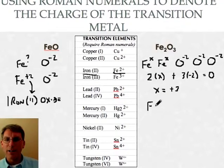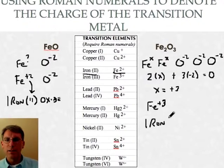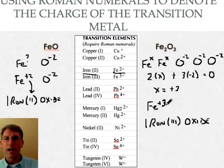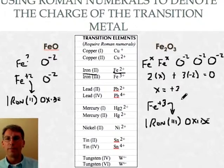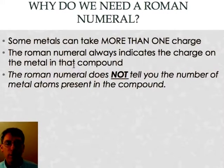So that means that my iron must be taking a positive three charge here. So when I name it I can name it iron with a positive three charge bonded to oxygen which is oxide. Iron three oxide. Again the charge is shown by the Roman numeral right there. Why do we need a Roman numeral? Again some metals can take more than one charge.